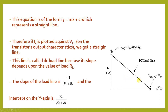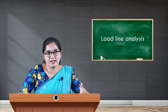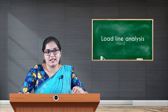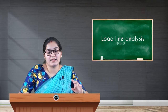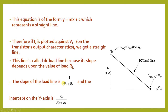RL is the load resistor, and therefore the name 'load line' comes from the fact that the slope of this straight line is derived from the value of RL. The slope of the load line is minus 1 by (RC + RE).